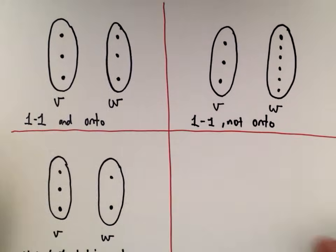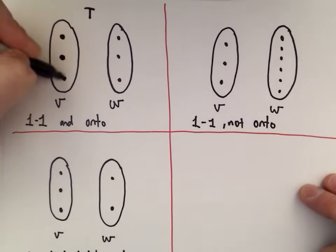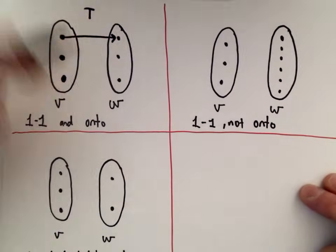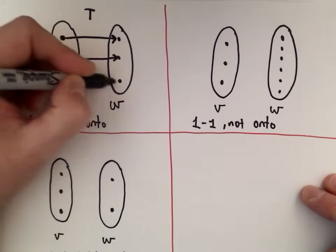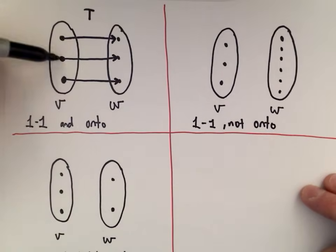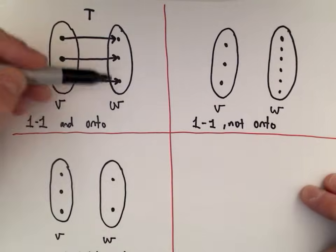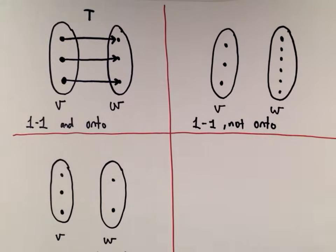In the first example, we have vector space V and vector space W with transformation T. A one-to-one function: the first element gets mapped to a distinct vector, the second one gets mapped to a distinct one, and the third also maps to a distinct one. This is one-to-one and onto, because every distinct vector maps to a distinct output, and all three elements in W have a corresponding vector in the domain.